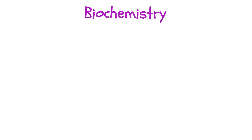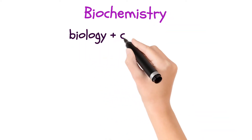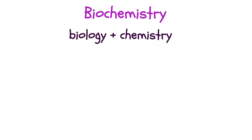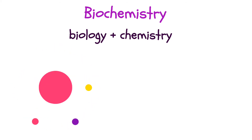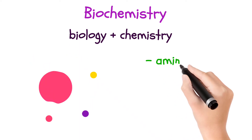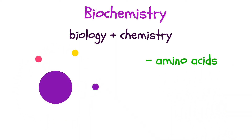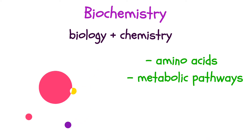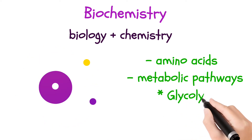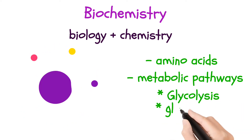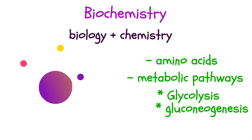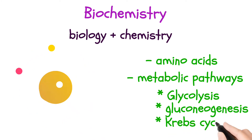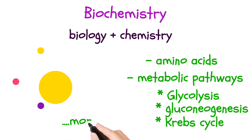Next is Biochemistry. Biochemistry is basically biology and chemistry combined — the chemistry of life. Everything chemistry that is related to life is what you learn here. So you learn about amino acids, metabolic pathways such as glycolysis, gluconeogenesis, the Krebs cycle, the pentose phosphate pathway, and a whole lot more.